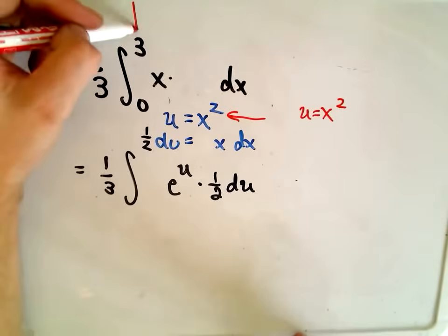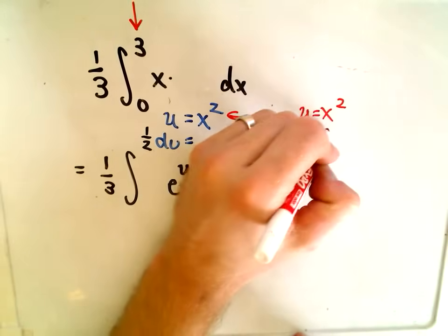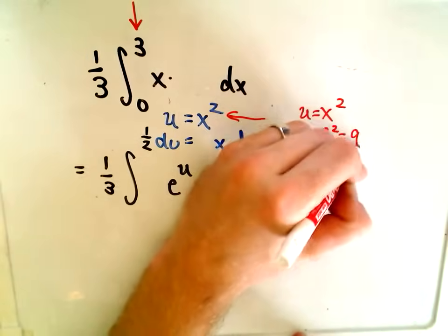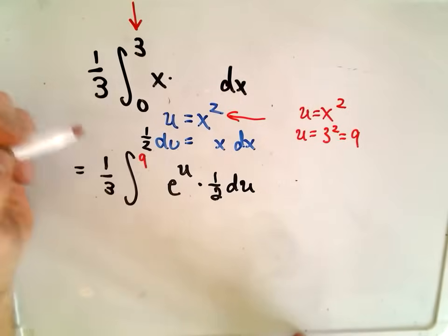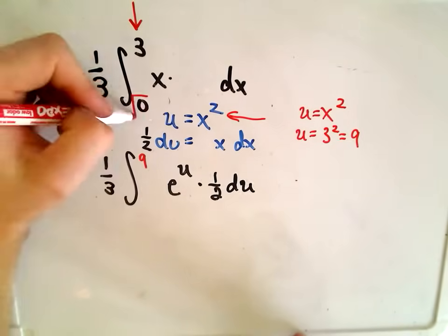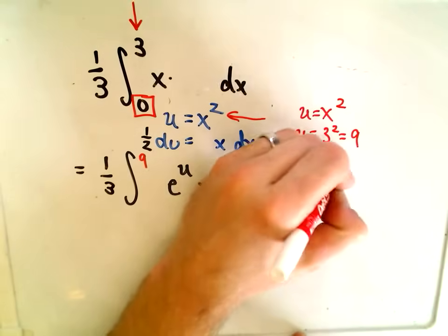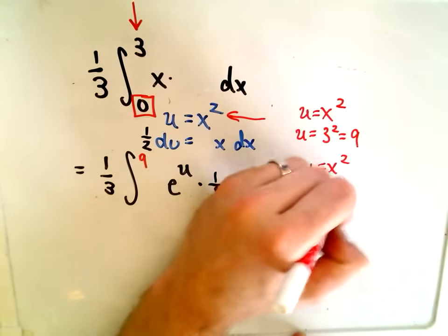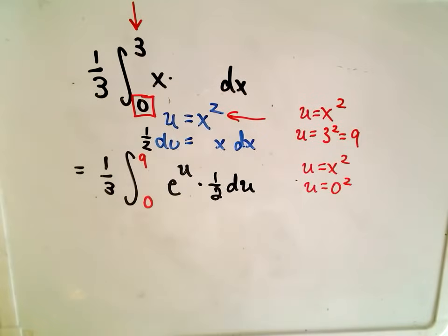So we look at u equals x-squared. So the upper limit of integration was when x equals 3. So we'll get u equals 3 squared, or 9. So the new upper limit of integration will become 9. The lower limit of integration was 0. So when we plug that into our substitution, we'll get u equals 0 squared, or our lower limit of integration will turn into 0.